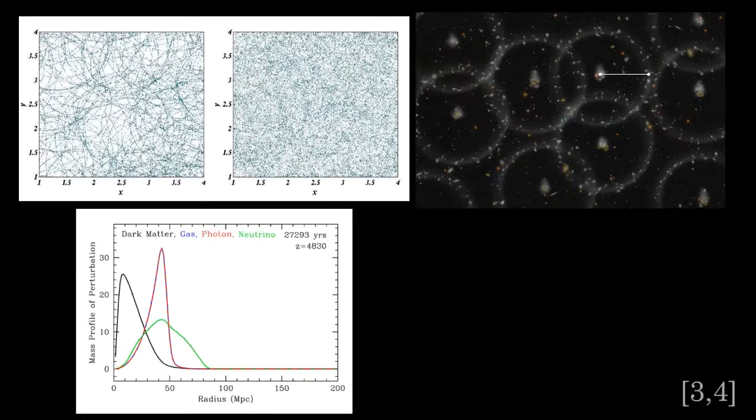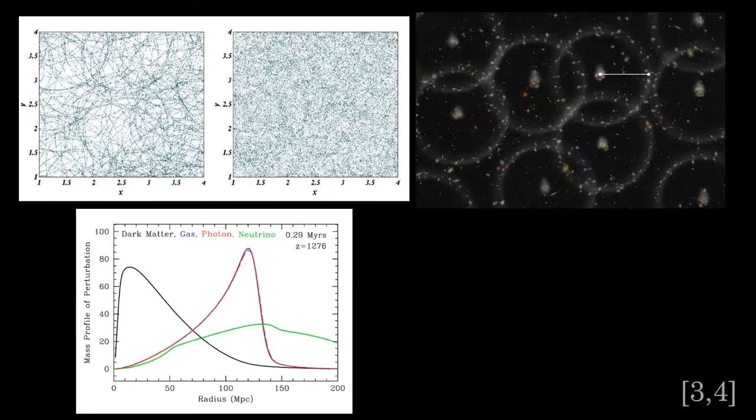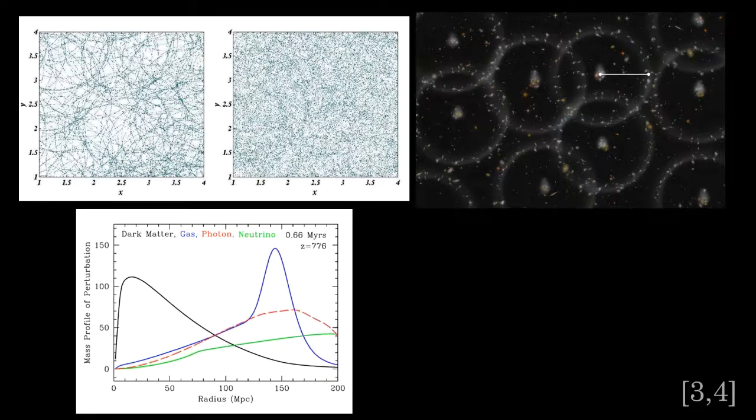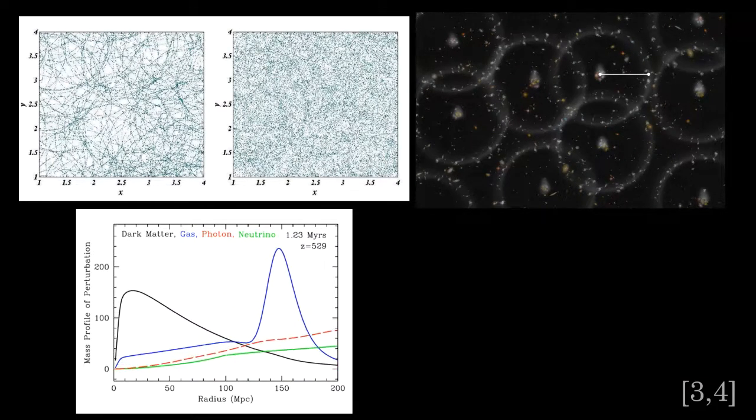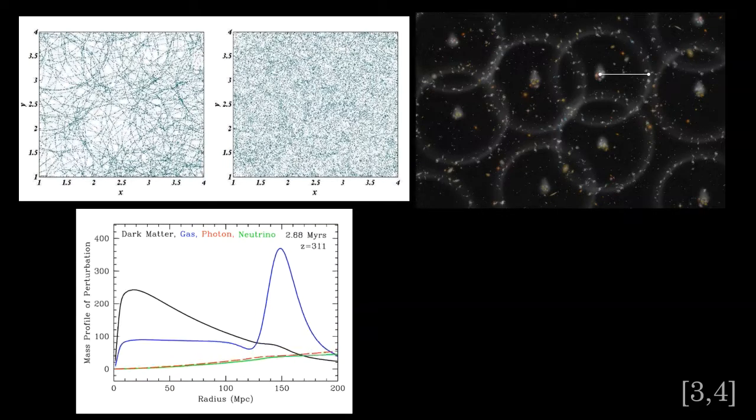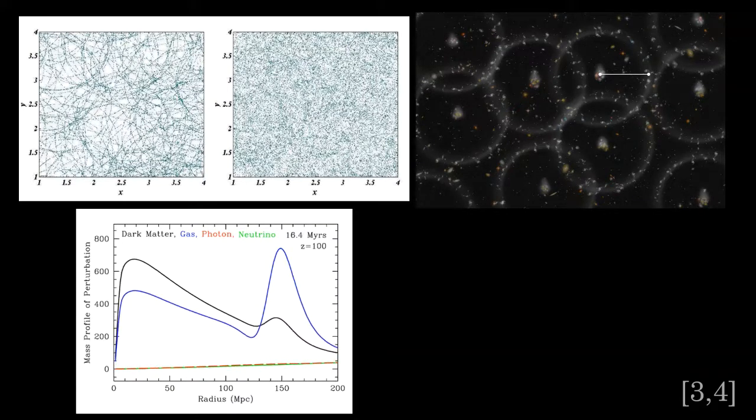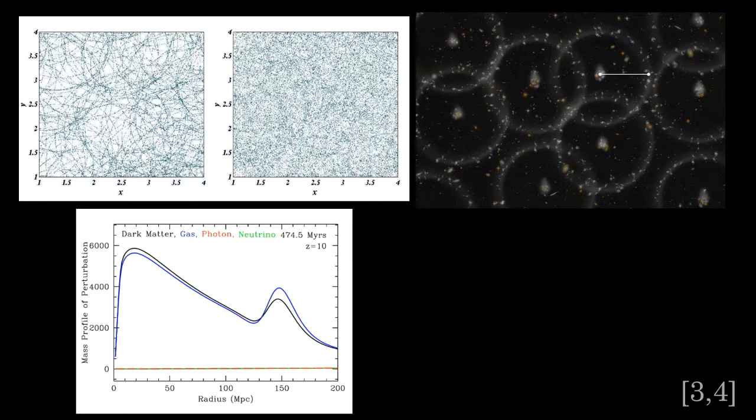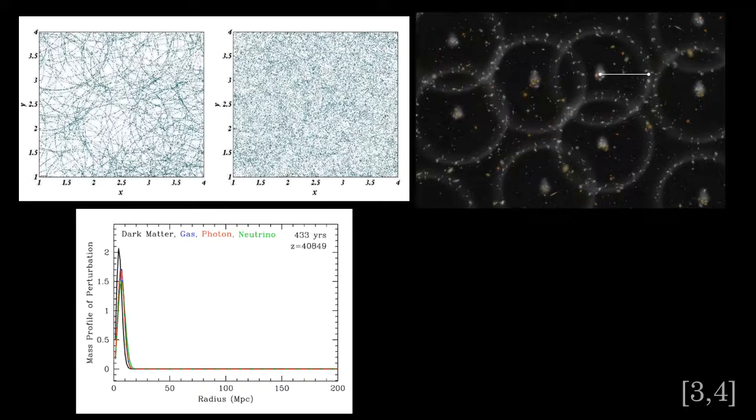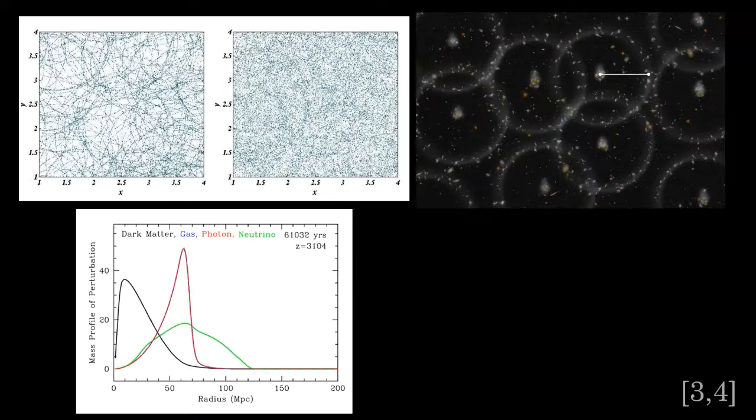This animated diagram shows an evolving spherical density perturbation in one dimension. Note the tight coupling of the baryonic matter, the blue curve, and the photons, the red curve, up until z equals 1,100. Also note how the dark matter follows the baryonic matter with a lag, since it is not directly subjected to photon interactions.